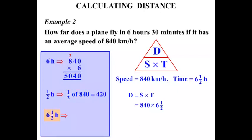So 6 and a half hours then. Well that's the distance in 6 hours. That's the distance in half an hour. Let's add the two distances. So let's do that addition. 0 plus 0 is 0. 4 plus 2 is 6. 0 plus 4 is 4. And 5 by itself remains as 5. So there we have it, 5,460.